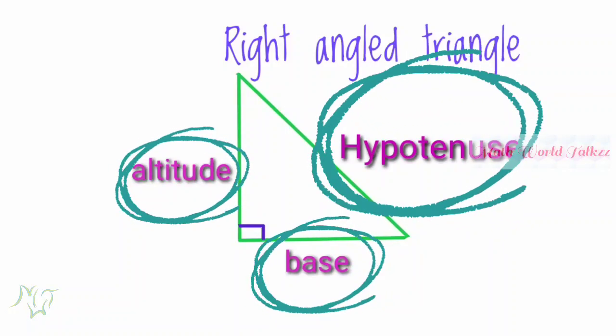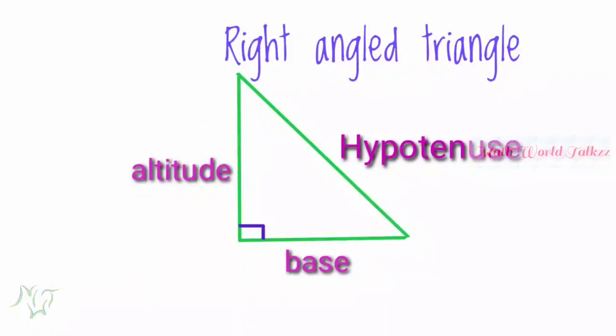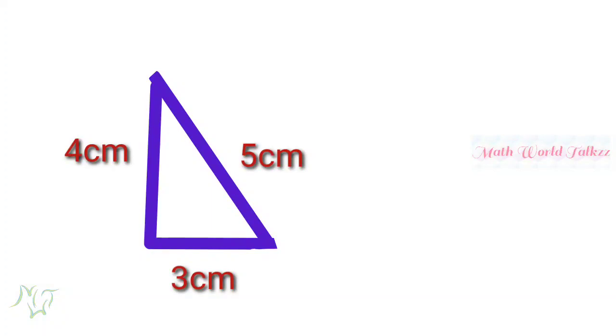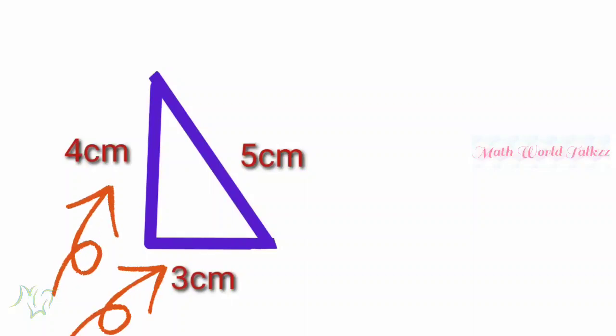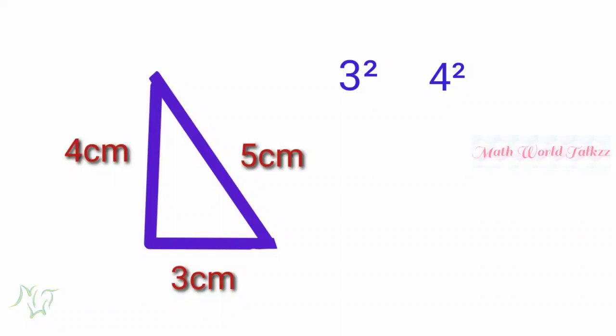There is a wonderful relation among these three sides in a right angle triangle. As you know, the hypotenuse is the biggest side. Let me show you with an example: here is a right angle triangle with perpendicular sides 3 and 4 centimeters and hypotenuse 5 centimeters. We can see the relation — if we square the two perpendicular sides, we get 3² and 4².